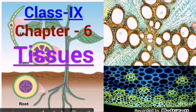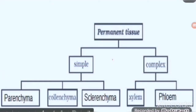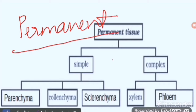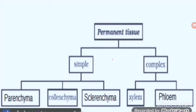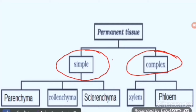In this video we discuss only the simple permanent tissue. Before discussing it, we must see this chart. Permanent tissues are stable — they don't divide. The tissues which have lost the capacity of cell division are called permanent tissues. Permanent tissues are categorized into two parts: simple permanent tissue and complex permanent tissue.